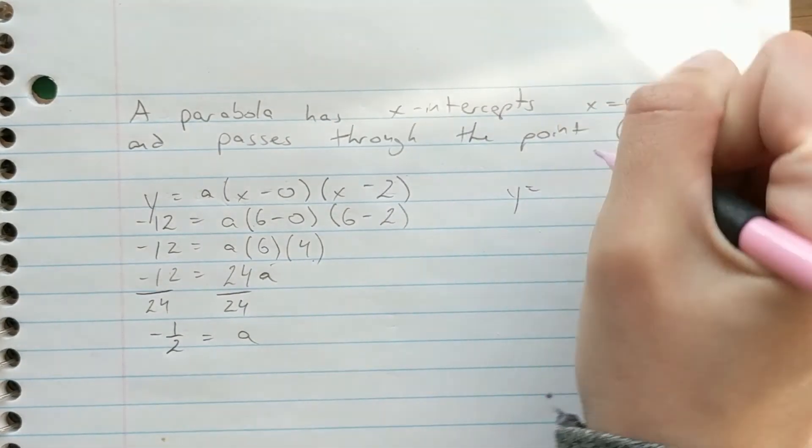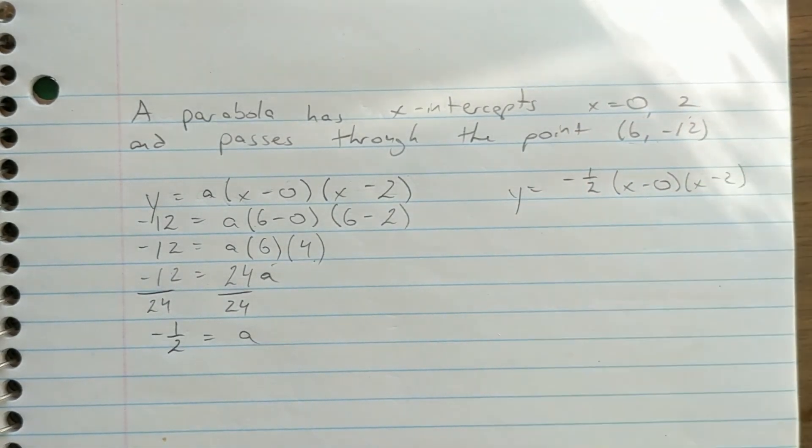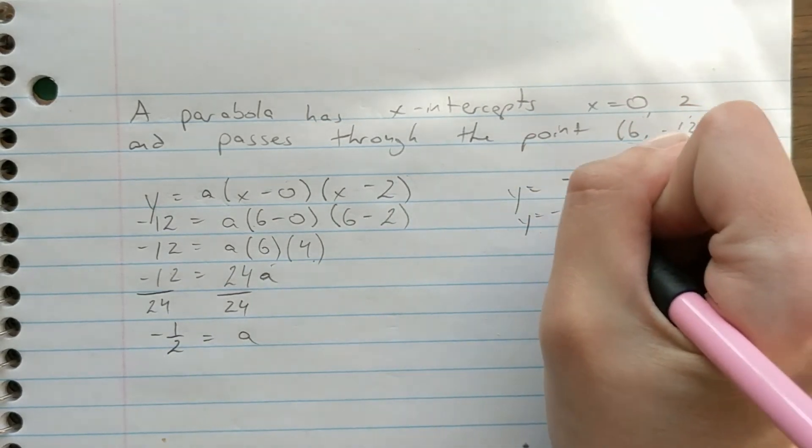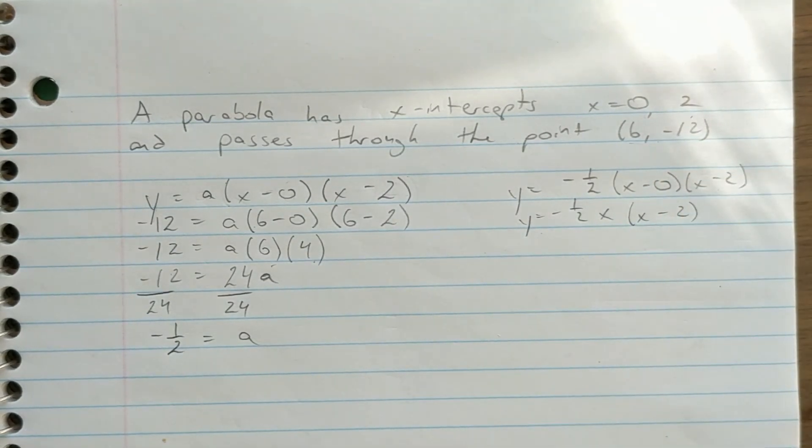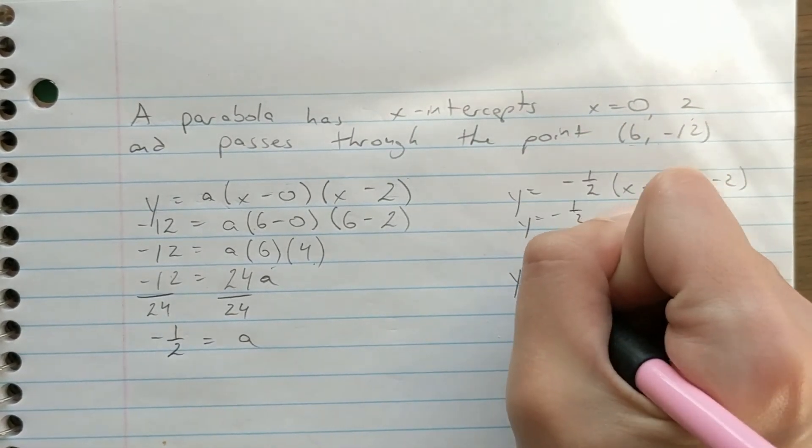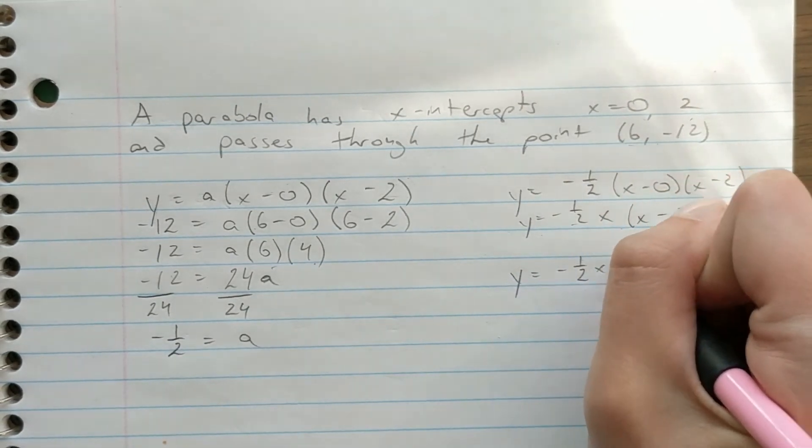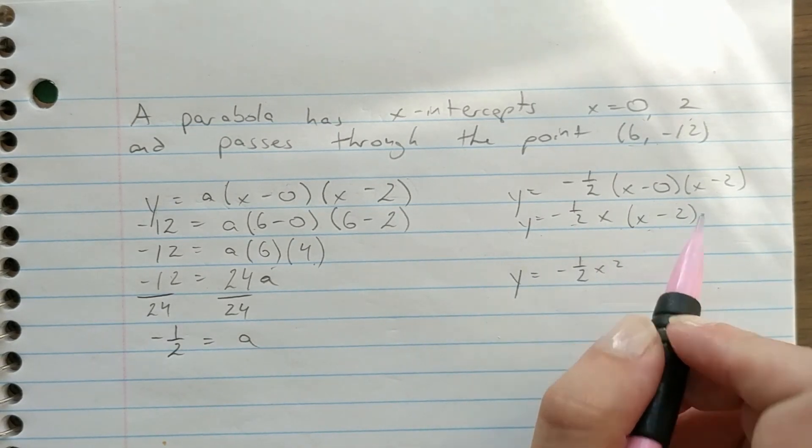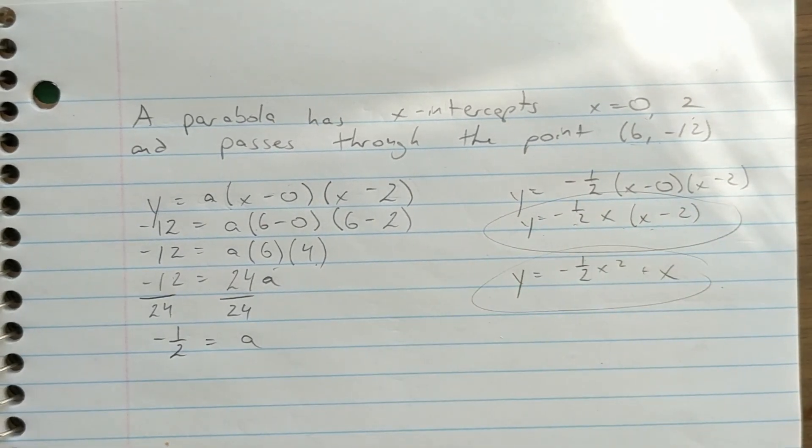Therefore, my final factored form is negative 1 over 2, x minus 0, x minus 2. And we can simplify this even further by removing our first bracket to just be x, x minus 2. Now in order to get standard form, I'm going to go ahead and use distributive property here. Negative 1 over 2x times x is negative 1 over 2x squared. Negative 1 over 2x times negative 2 is just going to be positive x. So I have my standard form and I have my factored form.